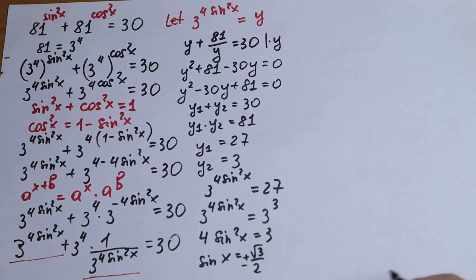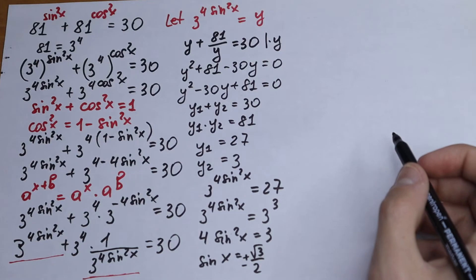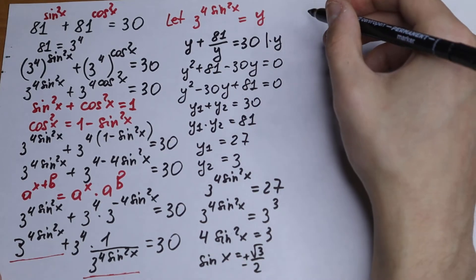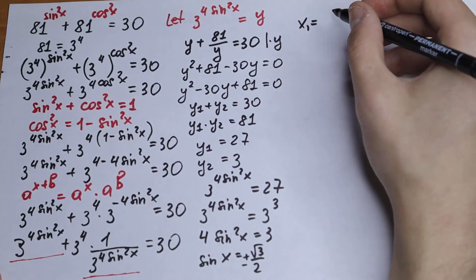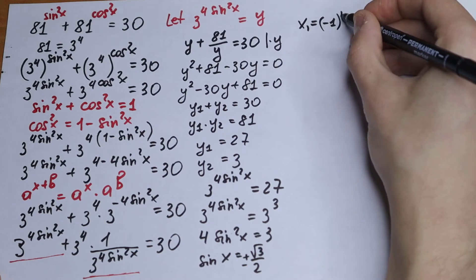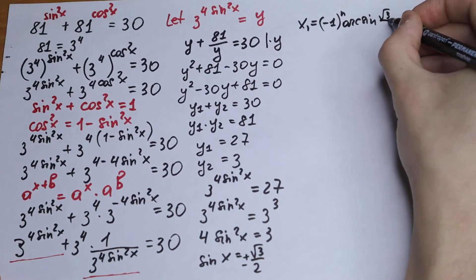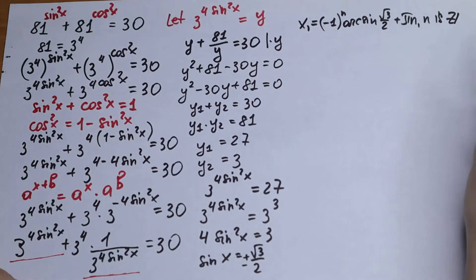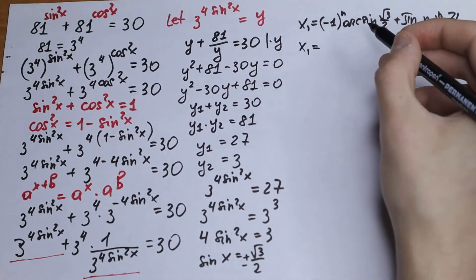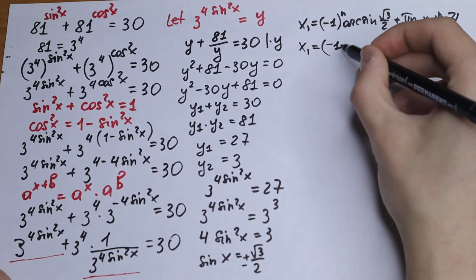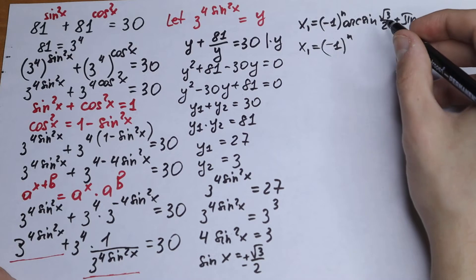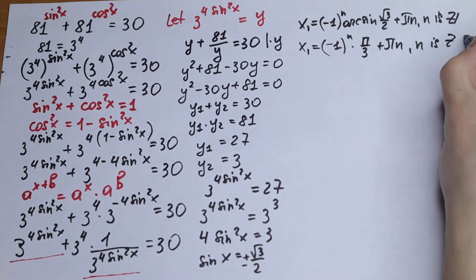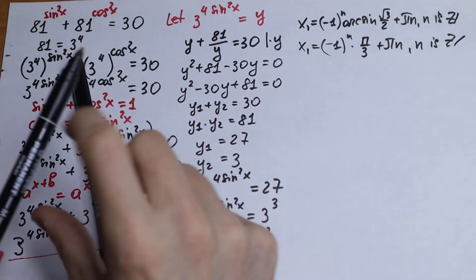Dividing both sides by 4 and taking the square root of both sides, we get sin x = ± √3/2. This is a table (standard) case. So x₁ = (−1)^n · arcsin(√3/2) + πn, where n ∈ ℤ. Since arcsin(√3/2) = π/3, our first root is x₁ = (−1)^n · π/3 + πn, n ∈ ℤ.